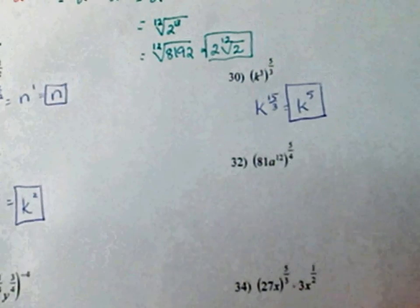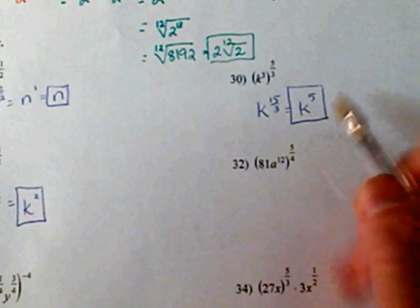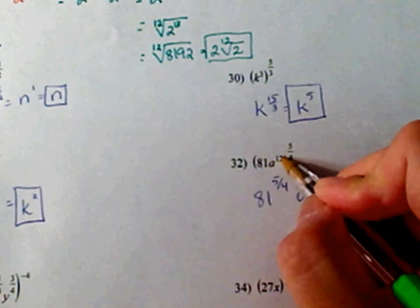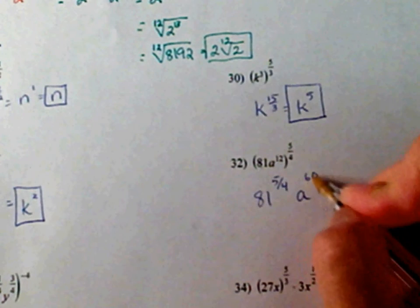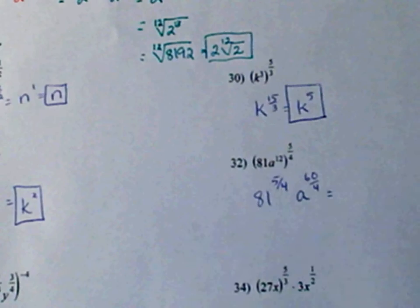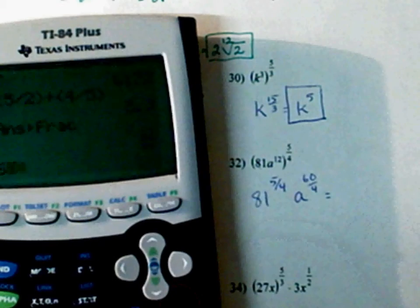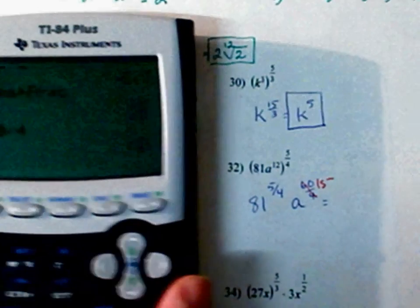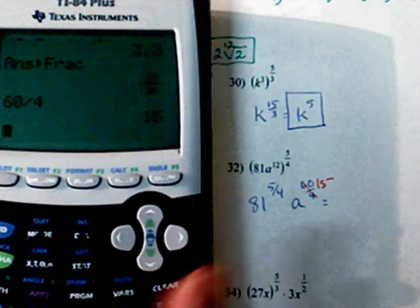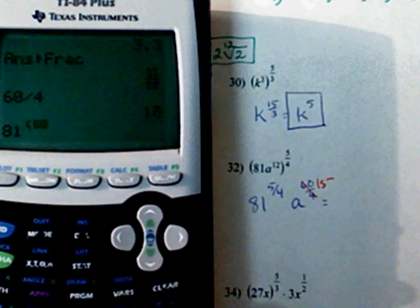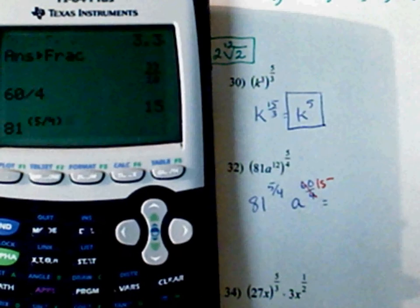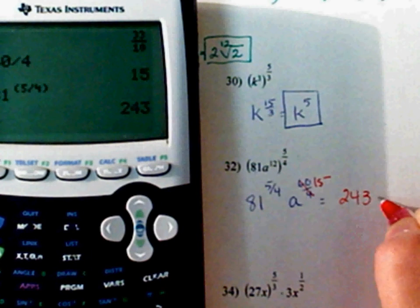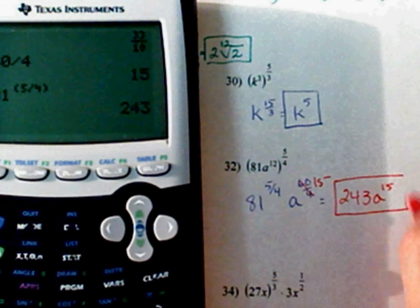33. 81 is also to that power. So, 81 to the 5/4. A, 12 times 5 is 60 over 4. Well, 60 divided by 4 is a whole number. So, I'm going to mark that off and put a 15 in its place. And 81 to the 5/4. Just like that. And that comes out to be 243. So, your final answer is 243 a to the 15th.